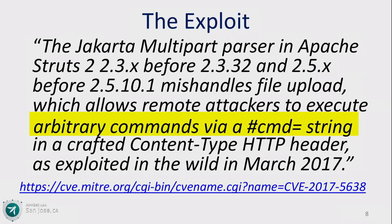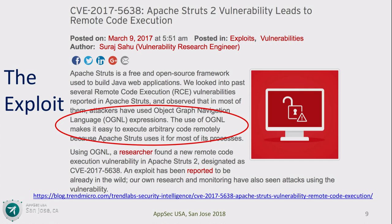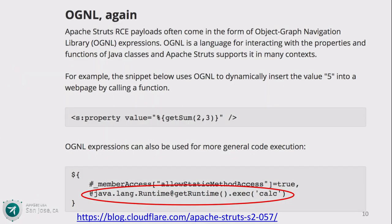What happened specifically was the attacker was able to upload a string of data inside of an HTTP header and trick the server into executing it as a system command. Within Struts is a library called the Object Graph Navigation Language, which is a common avenue for exploits right now for remote code execution. The attacker was able to upload a string which is then executed on the server as a system command. Once that happens, it's game over — you've lost.